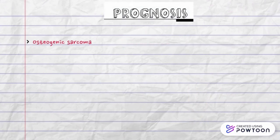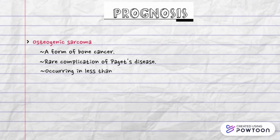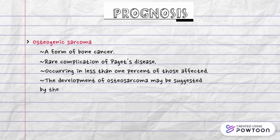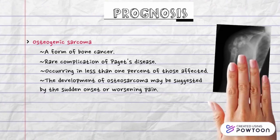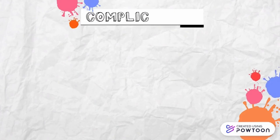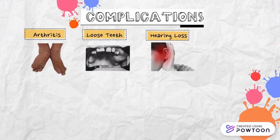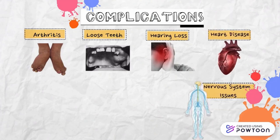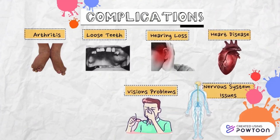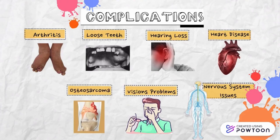Osteogenic sarcoma can occur as a rare complication of Paget's disease, affecting less than 1% of those with the condition. The development of osteosarcoma may be suggested by sudden onset or worsening pain. Paget's disease can also lead to further complications such as arthritis, loose teeth, hearing loss, heart disease, nervous system issues, vision problems, osteosarcoma, and Paget's sarcoma.